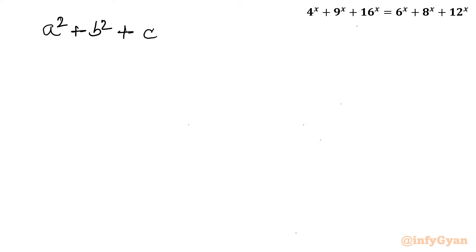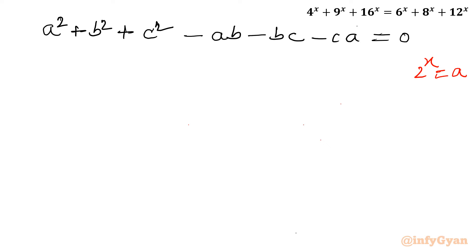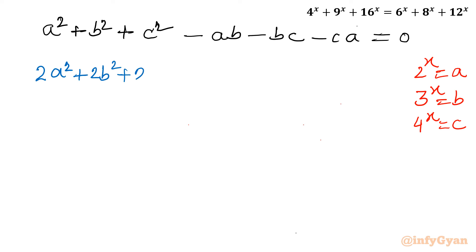Let us rearrange: a² + b² + c² − ab − bc − ca = 0. Now I will use an identity and multiply this equation by 2, giving: 2a² + 2b² + 2c² − 2ab − 2bc − 2ca = 0.